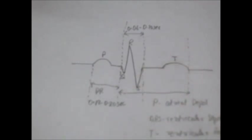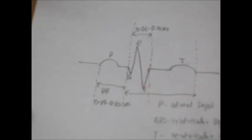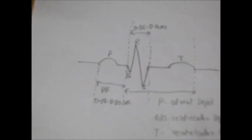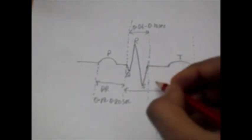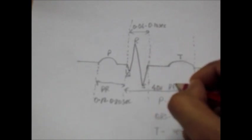QT interval is from the beginning of Q wave till the end of T wave. It usually changes with the heart rate and we can calculate it as 40% of RR interval.